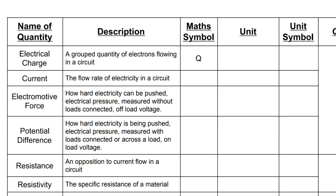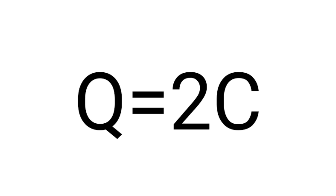The unit, as we've discussed, is called the coulomb, which remember is just a specific number of electrons that we've lumped together to make our calculations a little bit easier, and the unit symbol is a capital C. So if we had two coulombs flowing through a circuit, we'd write it like this: Q equals two C, charge equals two coulombs.